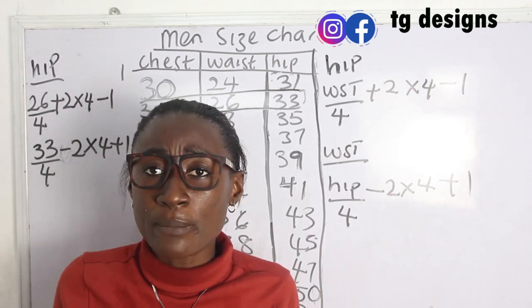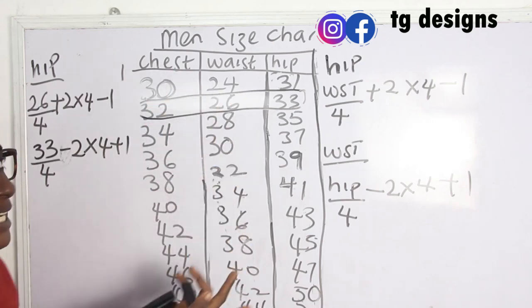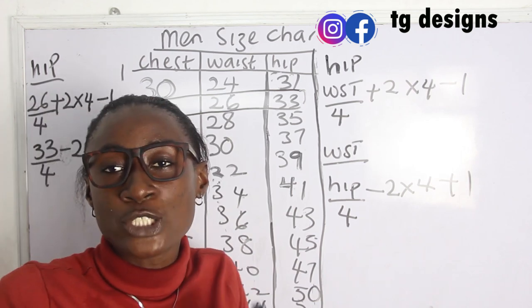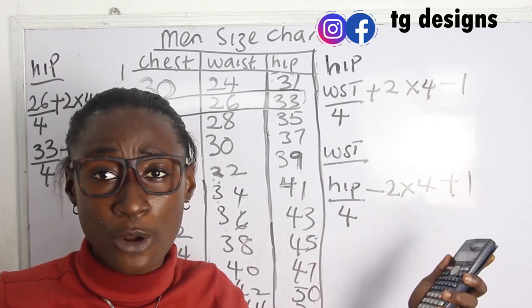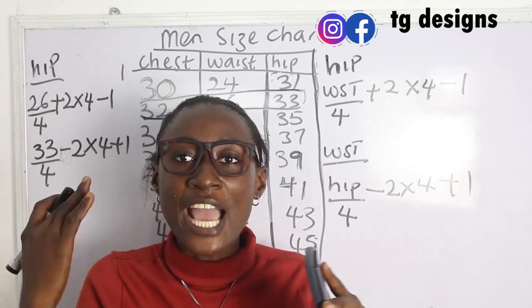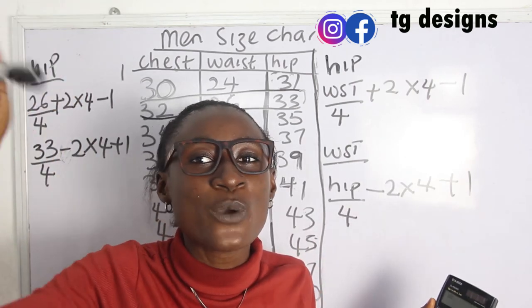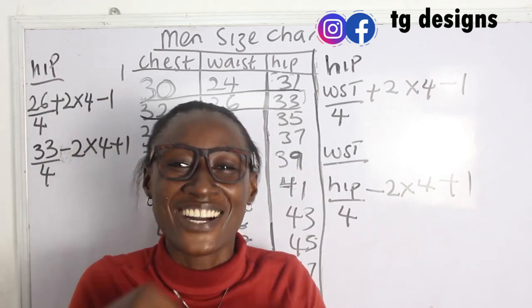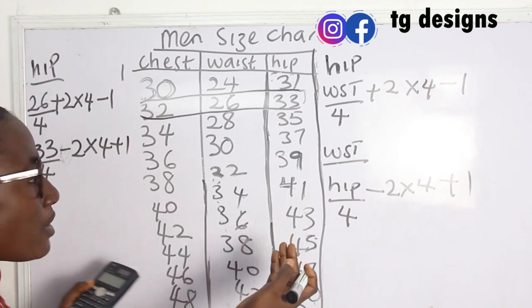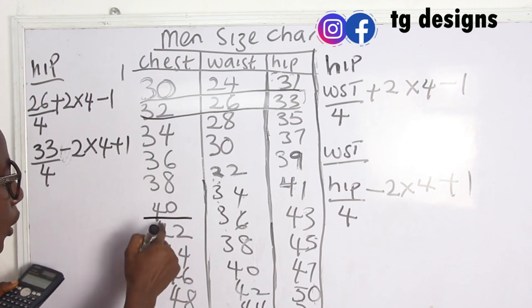So if a client says 'I'm size small,' all you need to know is that size small has a chest of 30 inches, and then you can derive the waist from the hip and vice versa. Let's pick another size at random and test the calculation. We'll go for size 40.